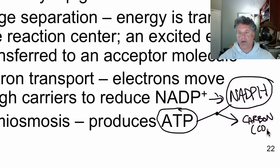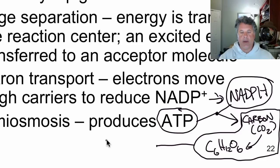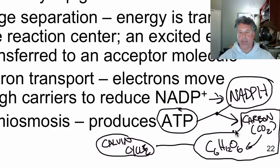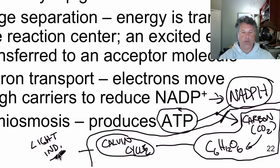NADPH and ATP can be used to drive the endergonic reactions of carbon fixation, fixing carbon from carbon dioxide into carbohydrates like glucose. This process of carbon fixation occurs in a series of biochemical reactions called the carbon fixation reactions or the Calvin cycle — analogous to the Krebs cycle. Everything up until the Calvin cycle has been light-dependent reactions, but the fixation of carbon in the Calvin cycle consists of light-independent reactions, which we'll cover shortly.